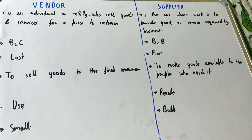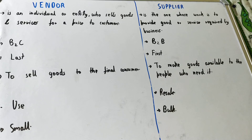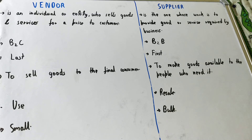If we talk about the quantity provided, the vendor provides a small quantity to the customer because each customer needs only a small amount of product, not in bulk. But the supplier provides quantity in bulk to other businesses, because those businesses in return will be providing goods and services to multiple end customers. That was all about the difference between vendor and supplier. If you like the video, please hit the like button and do subscribe. Thanks for watching.